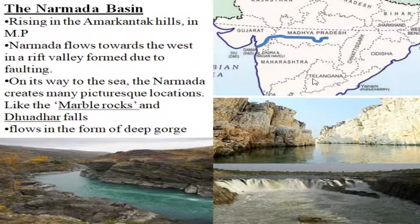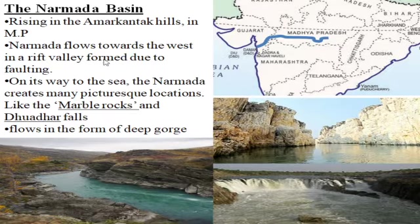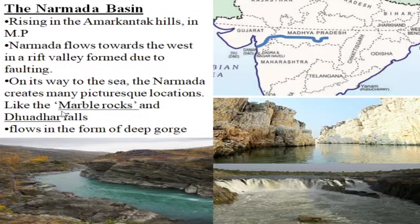The first river is Narmada. Narmada river originates from Amarkantak, Shahdol, Madhya Pradesh, and flows towards the west in a rift valley formed due to faulting. On its way to the sea, the Narmada creates many picturesque locations. It creates beautiful scenic spots like Marble Rocks and Dhuandhar Falls — Dhuandhar Falls is located in Jabalpur, Madhya Pradesh.